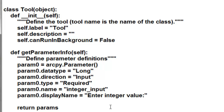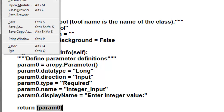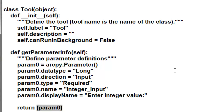The display name will be 'enter an integer value'. And then instead of return parameters, we're going to return a list of any classes that we've defined — so here we define param zero. We'll save our work and test drive our Python toolbox.